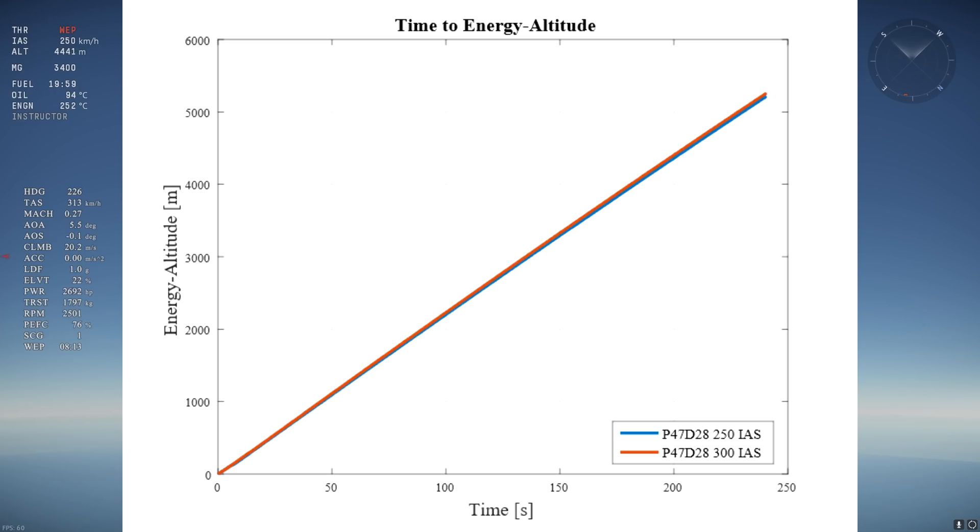As you can see on this graph, the 300 IES climb leads in energy gain by nearly 1% over the 250 IES climb, just like we calculated previously.